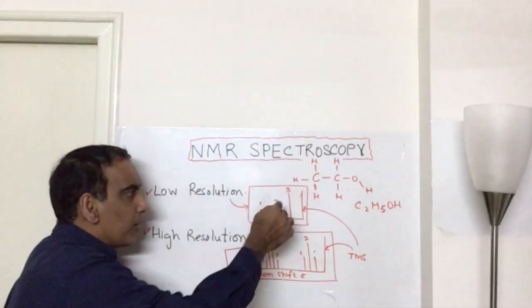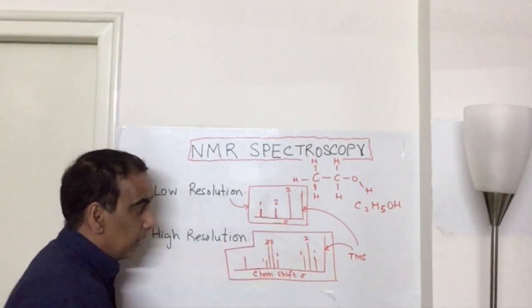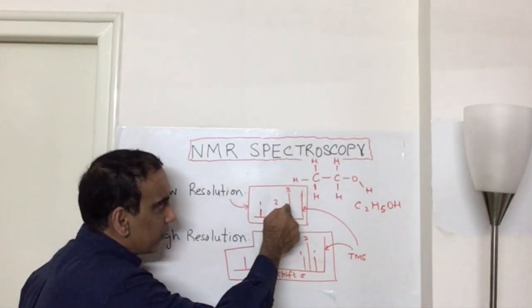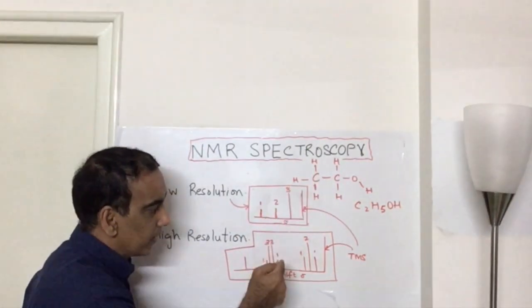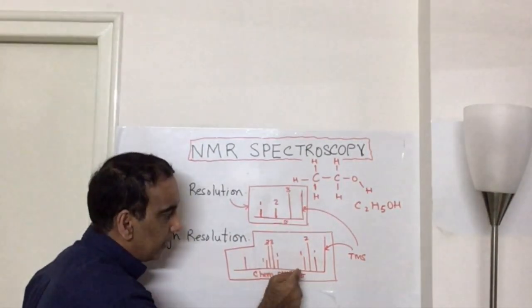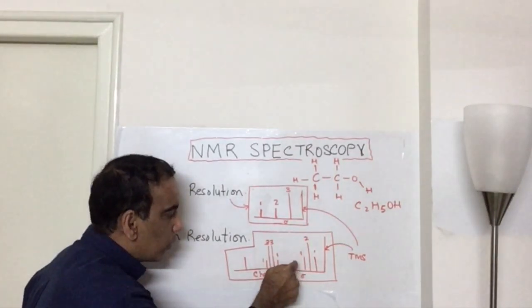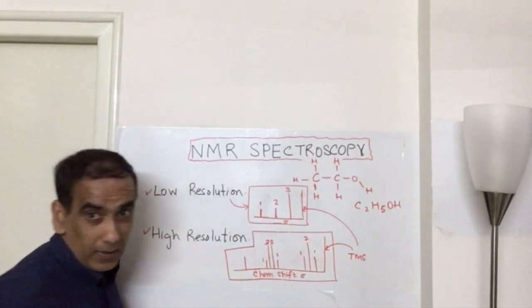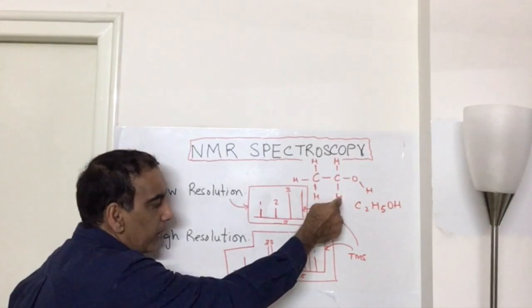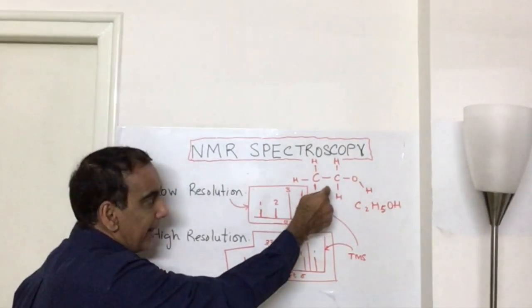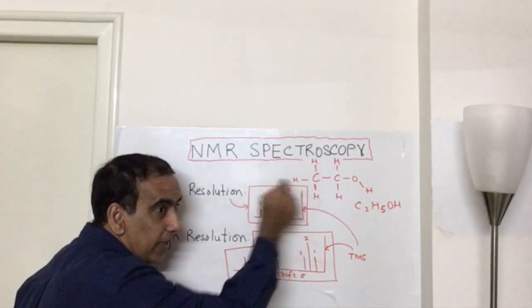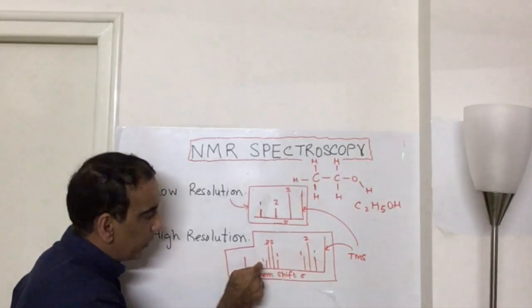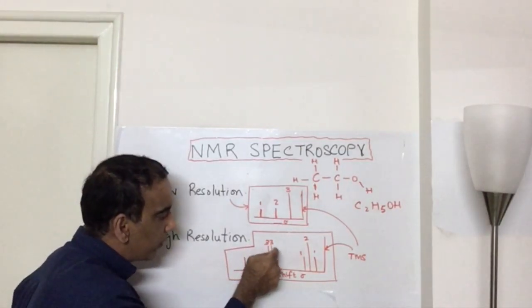And if we were to zoom in on each of these peaks, you would note that this peak, which corresponds to three hydrogens, is actually split into a triplet in the ratio of one is to two is to one. And this peak, two hydrogens, but having a neighbor that has three hydrogens split in a ratio of one to three to three to one.